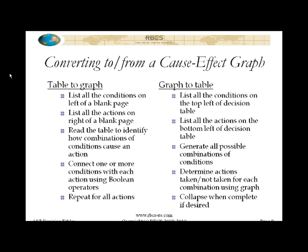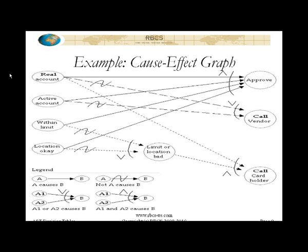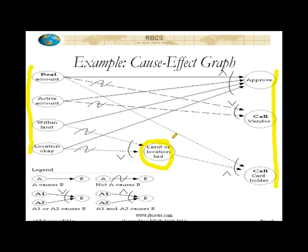This probably doesn't make a lot of sense yet if you haven't seen a cause-effect graph, so let me show you one. This cause-effect graph is equivalent to the table I showed you in previous slides. You've got your conditions on the left-hand side — real account, active account, within limit, location okay — and then we have actions on the right-hand side. We also have an intermediate condition in here, which I will explain in just a minute. We use four logical operators to connect the conditions with the actions to be either taken or not taken.